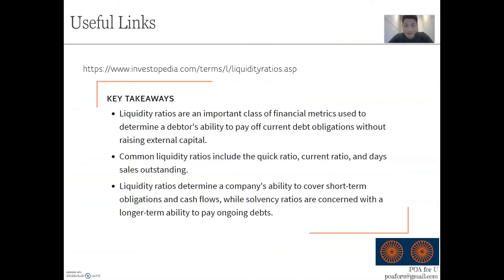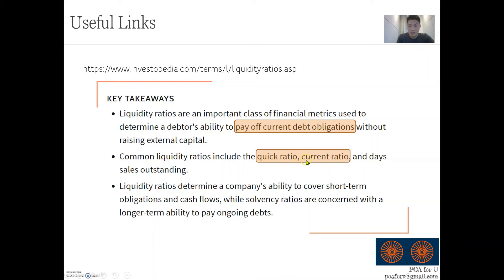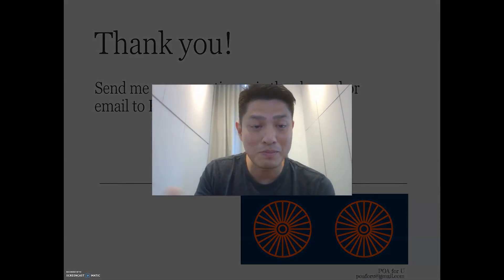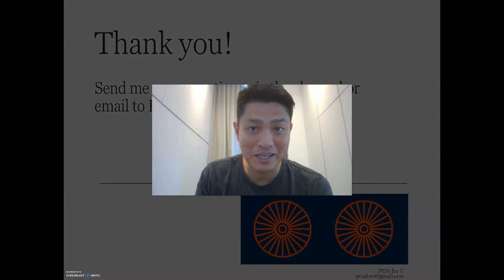There's a lot of information online — if you Google liquidity ratio, you'll get tons of resources. One I've extracted from Investopedia.com gives write-ups and videos on what liquidity ratio is, noting it measures a company's ability to pay off its current debt, i.e. current liabilities, and covers the common liquidity ratios we've discussed. If you have any questions about this lesson, please contact me at poaforyou@gmail.com or through my channel. In the meantime, practice, practice, practice, and all the best.